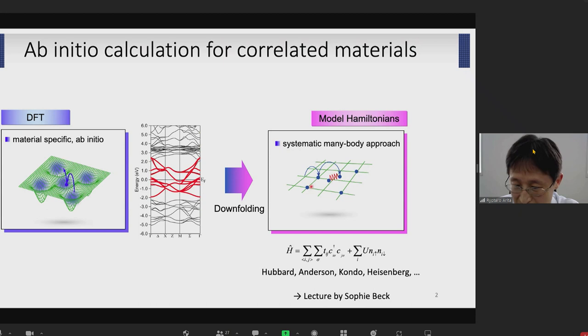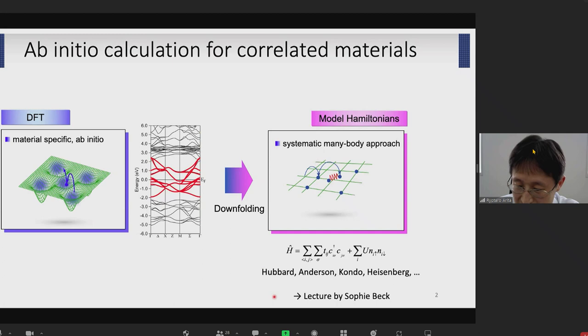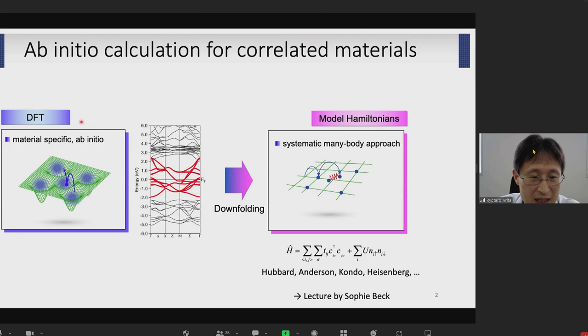So there are two steps: first, we derive an effective model, and then analyze that model. For the second part, we can consider many types of method — dynamical mean field theory is one such method, and that part will be discussed in the next lecture. In my talk, I'm going to mainly focus on the first step: how to derive an effective low-energy model from first principles. When constructing such an effective low-energy model, it is convenient to construct Wannier functions which are localized in real space, because model Hamiltonians — both one-body part and interaction part — are short range in real space.